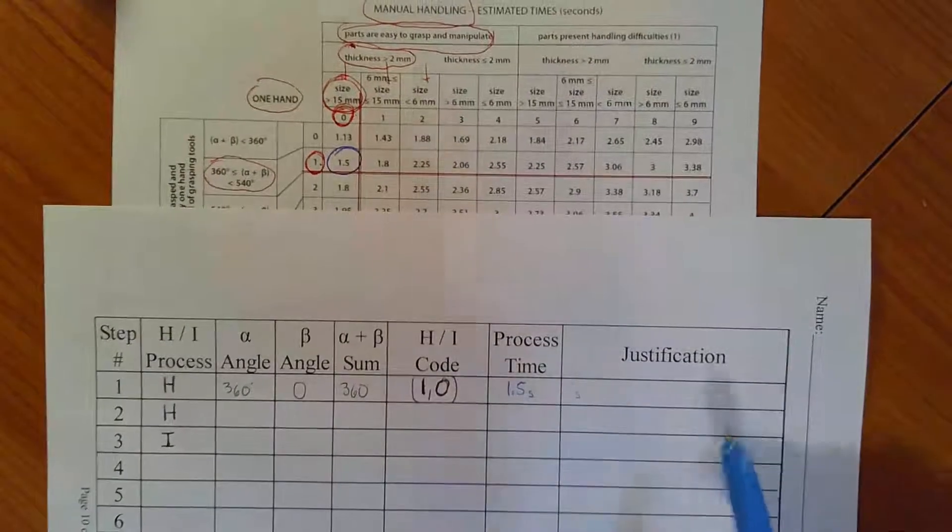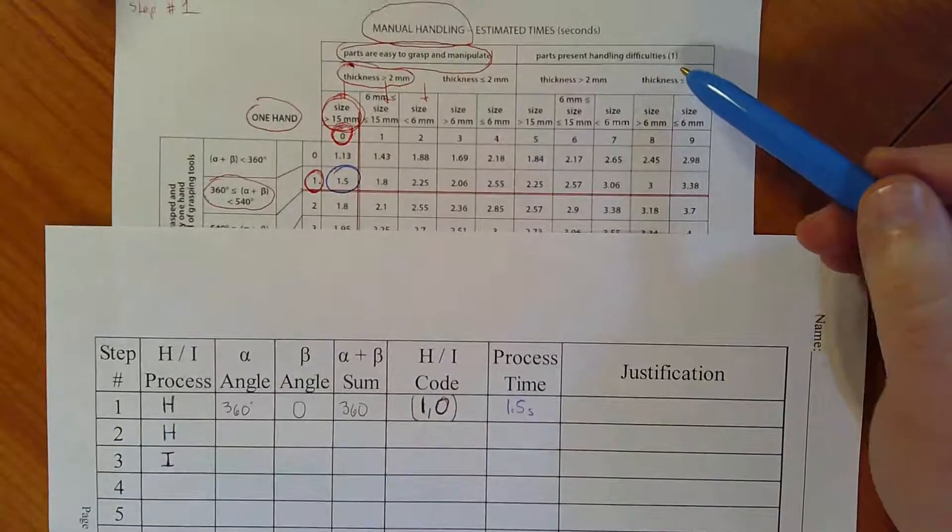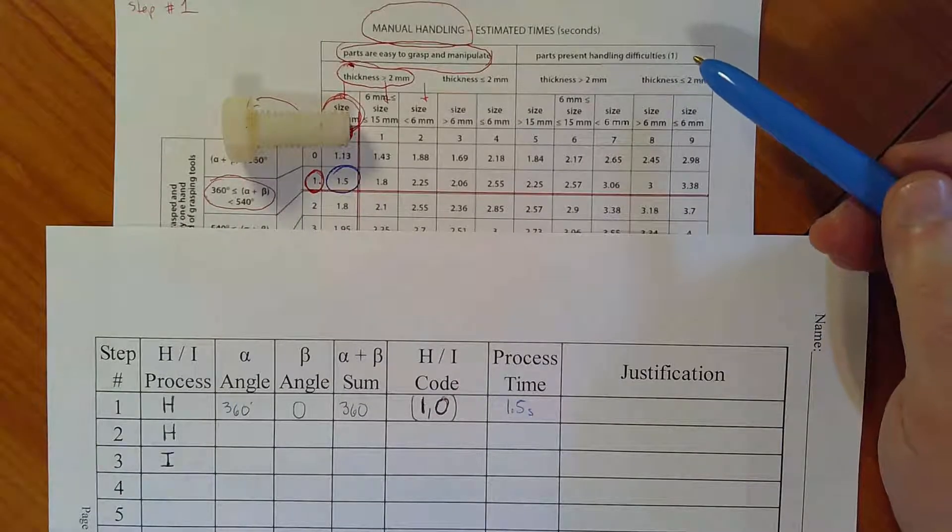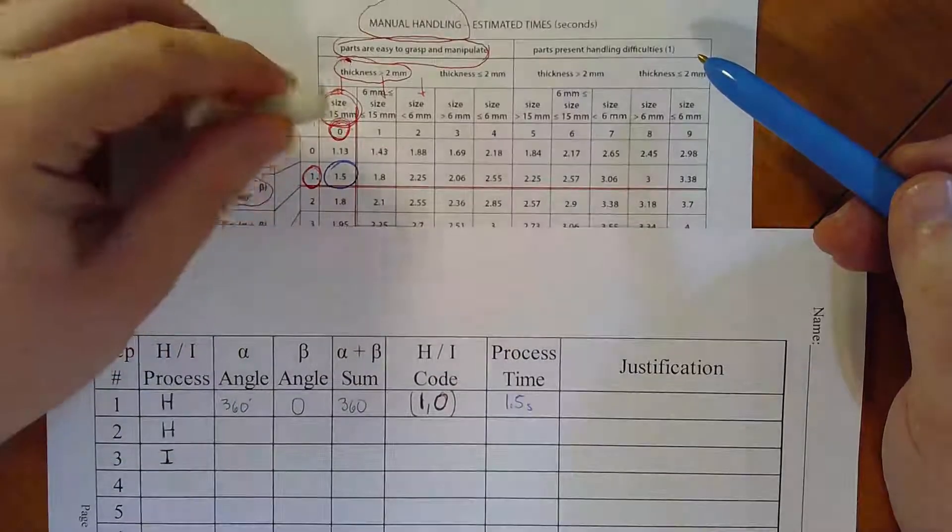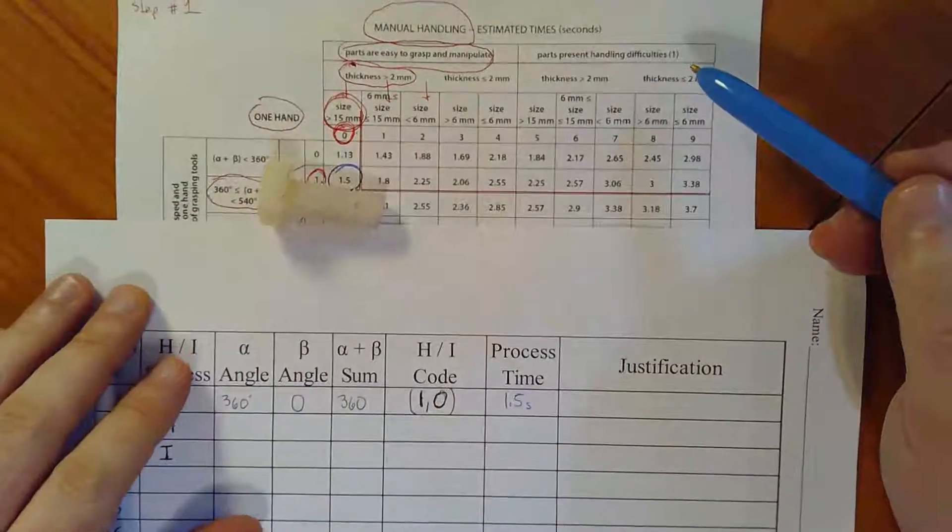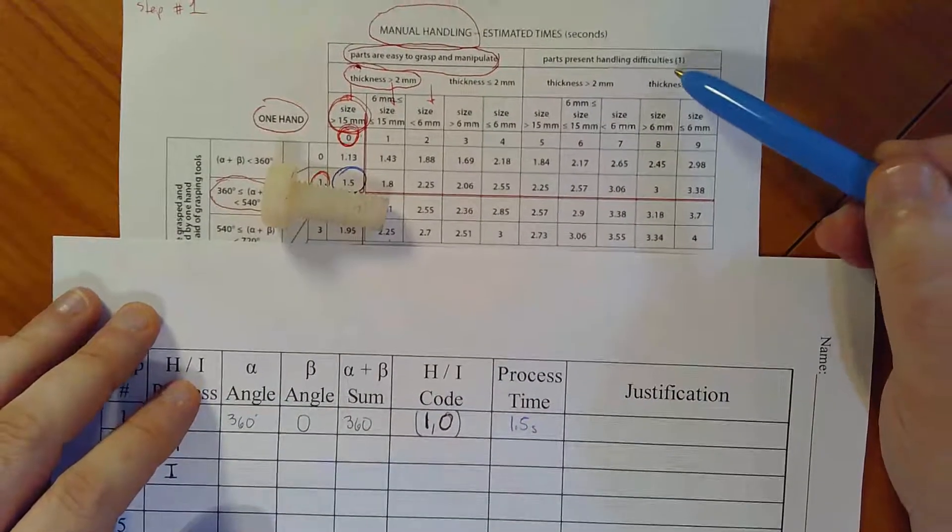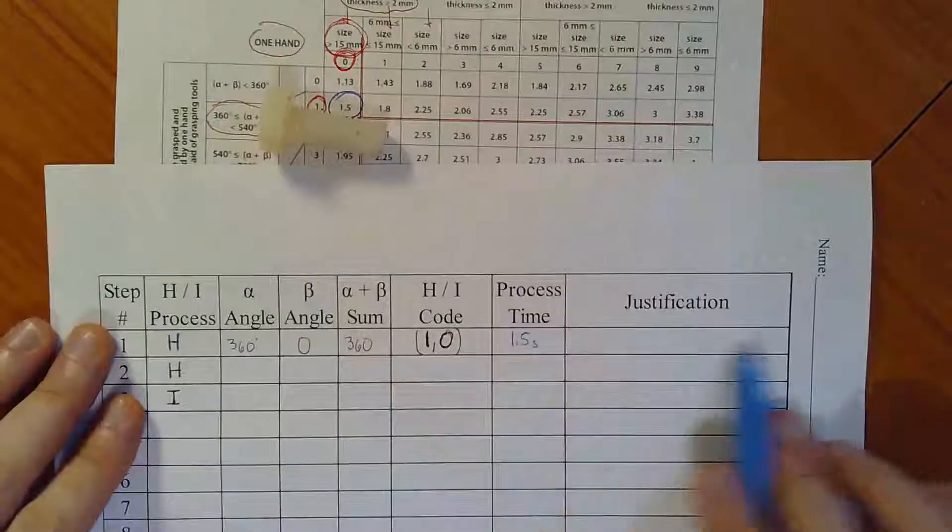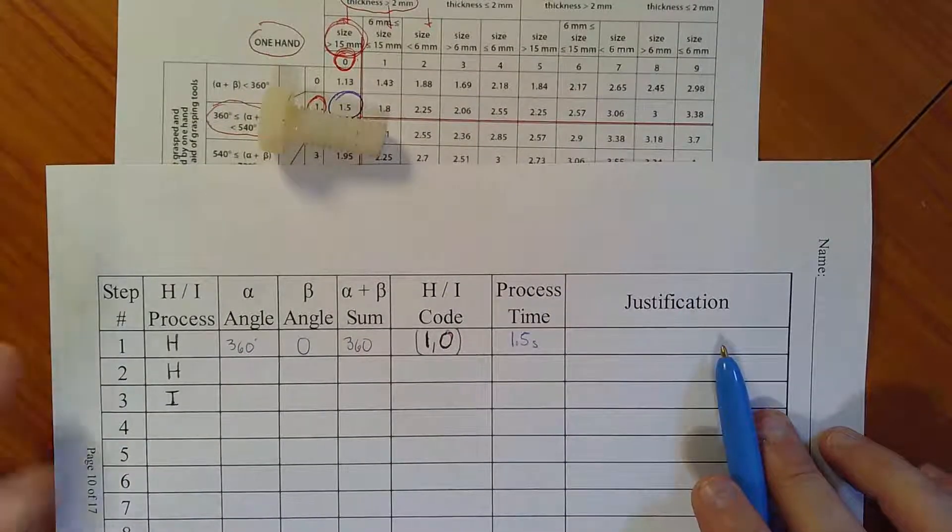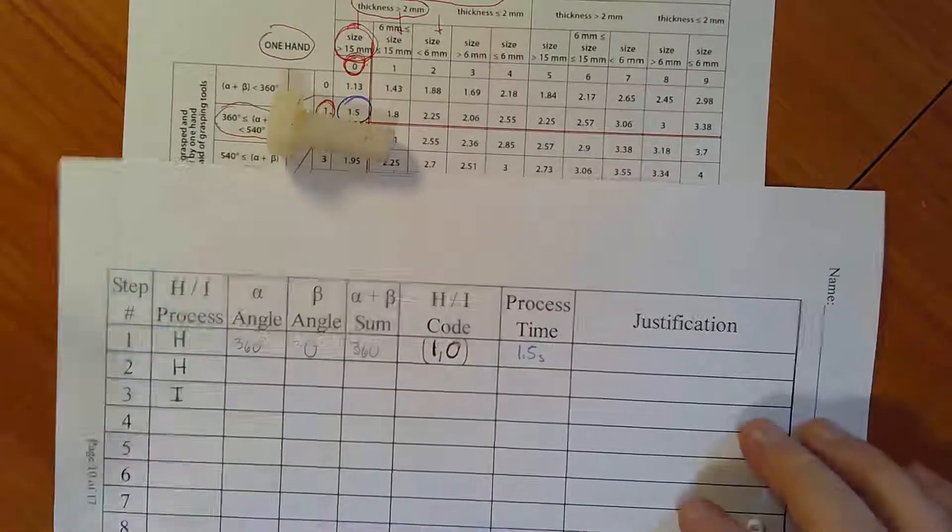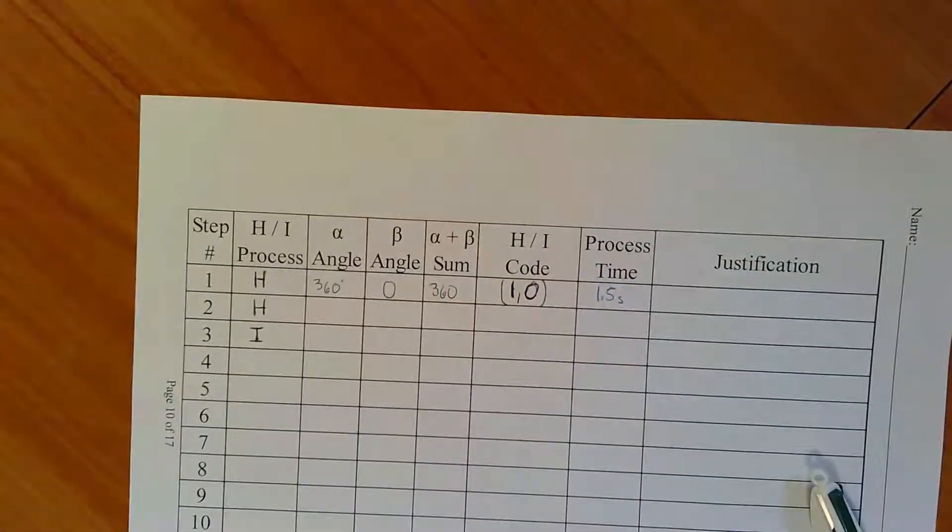So for the process time, I'm going to put one point five seconds and I'm going to leave this blank. But I leave justification here just in case there might have been multiple options. Like you might have decided for some reason that this part presented handling difficulties. Maybe instead of being made out of nylon, it's made out of stainless steel, fresh from having the threads cut. And maybe the threads are quite sharp, in which case you might want to avoid just grabbing it by the threads because you can be cut, in which case it might present handling difficulties, even though the part is dimensionally the same. So the justification I leave here for you to write in just in case something unusual like that happens and you want a record of why you made a particular decision. Okay, so we've got step one now in the books. I'm going to move this out of the way and we will move to step two.